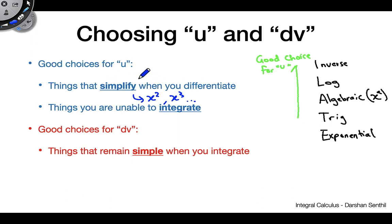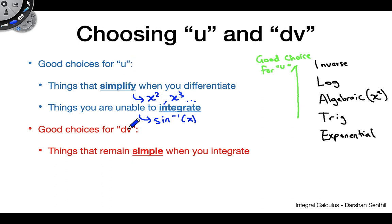You usually want to choose polynomials as u if you can. The other thing is: things that you are unable to integrate — like arc sine, for example — are things we don't currently know how to integrate. You want to make sure you choose those as u, because whatever you choose for dv you will have to integrate. If you don't know how to integrate it, best to choose it as u.